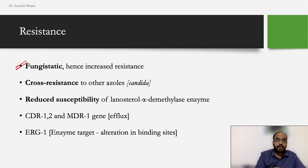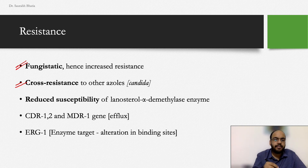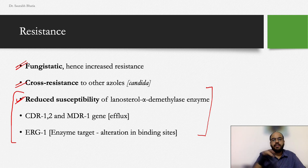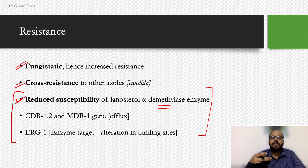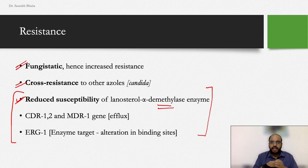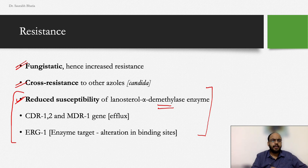Cross-resistance is seen among azoles, especially in candidal infections. The major resistance mechanism is reduced susceptibility of the lanosterol 14-alpha-demethylase enzyme — fluconazole binds poorly to the enzyme, fails to inhibit it properly, and the fungus continues to live. Key resistance genes include CDR1 (Candida resistance gene 1), CDR2, and MDR1 (multidrug resistance gene 1), which encode for efflux pumps.